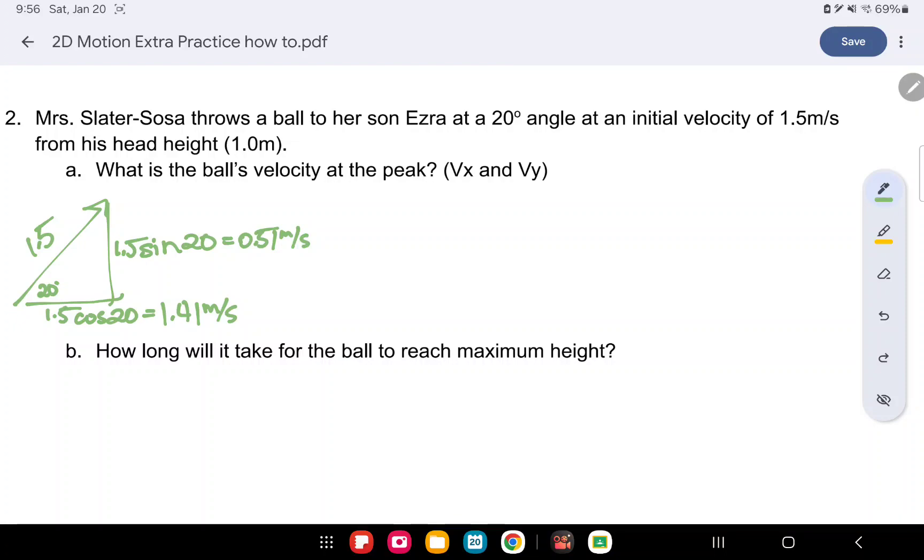What is the ball's velocity at peak? All right, so this is a concept question. We just determined our x velocity, which is this. So our vx at peak isn't going to change from our starting. So it'll be 1.41 meters per second. At peak, we know that vy is going to be 0. Concept question. Because at the very top, it's where it's slowing down to a 0 and then coming right back down like this.